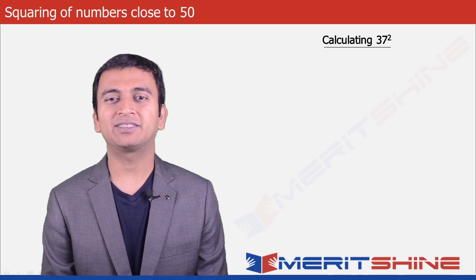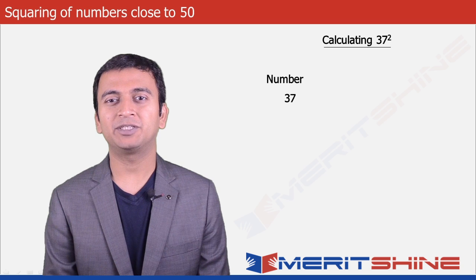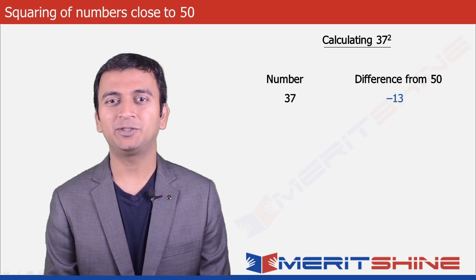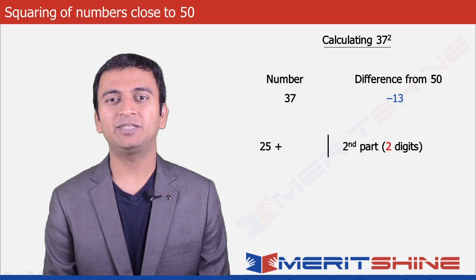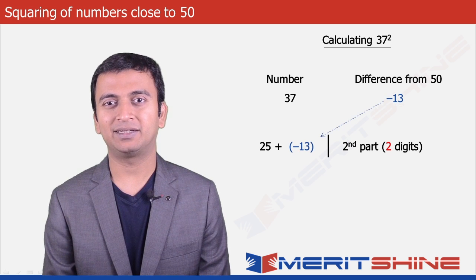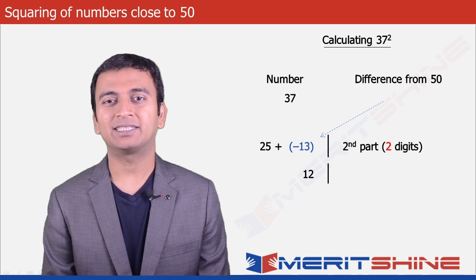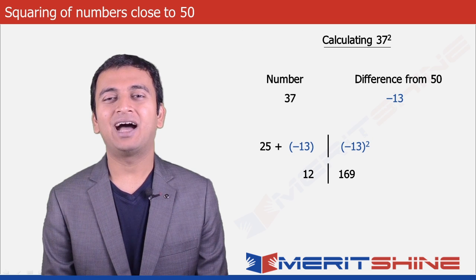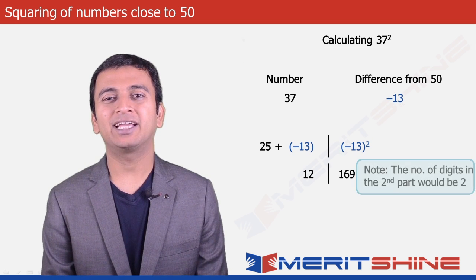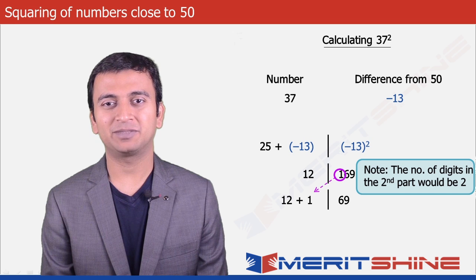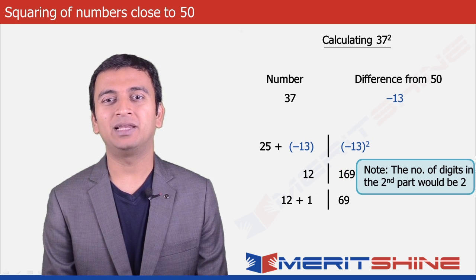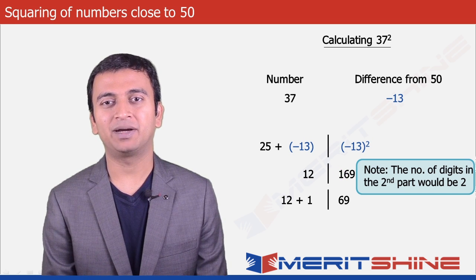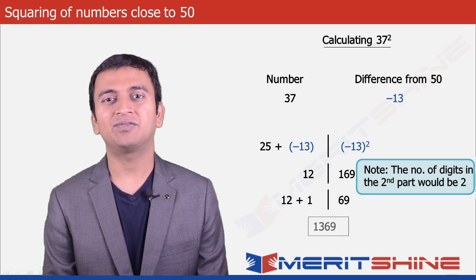Let us now try to find the square of 37. The difference from 50 would be minus 13. The first part would be 25 plus minus 13 which will give us 12, and the second part would be the square of the difference, which is minus 13 squared giving us 169. Since our second part can have only two digits, the extra 1 will be carried over to the first part making it 12 plus 1, and we will be left with 69 in the second part, giving us our final answer as 1369.